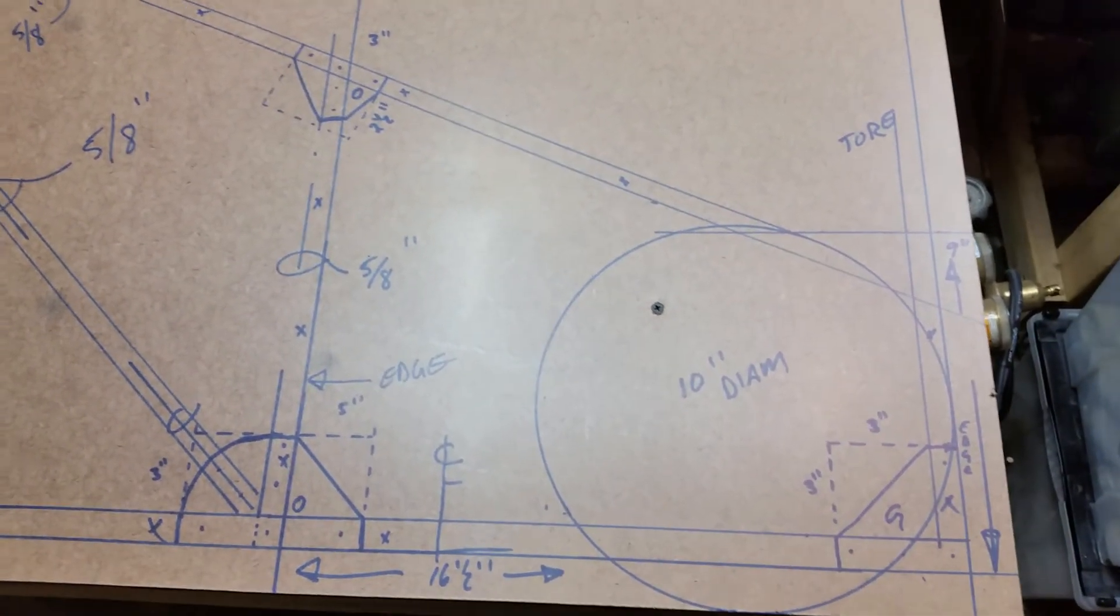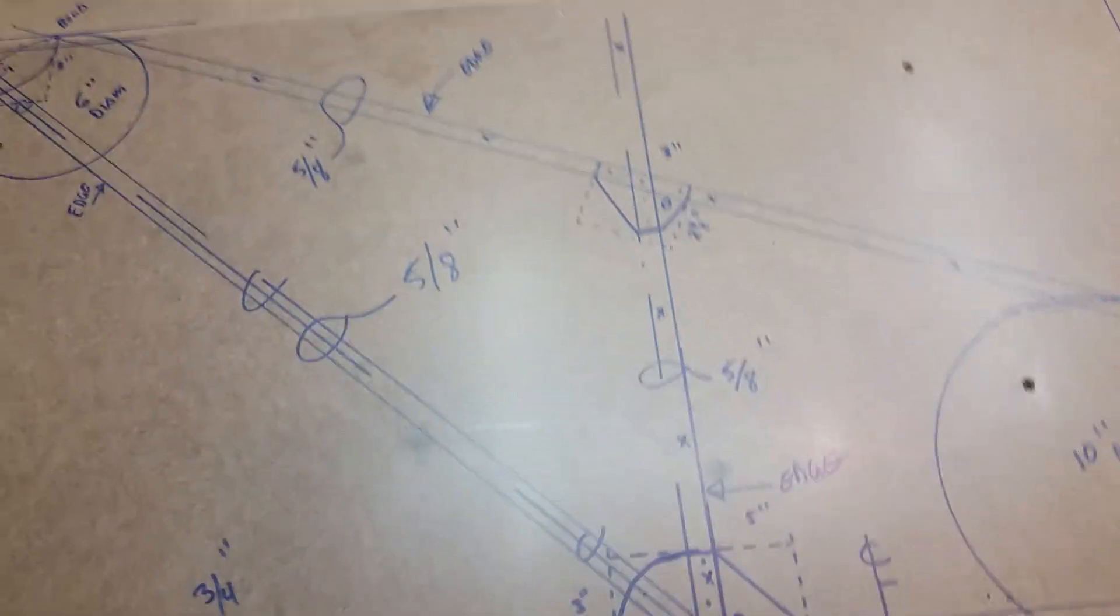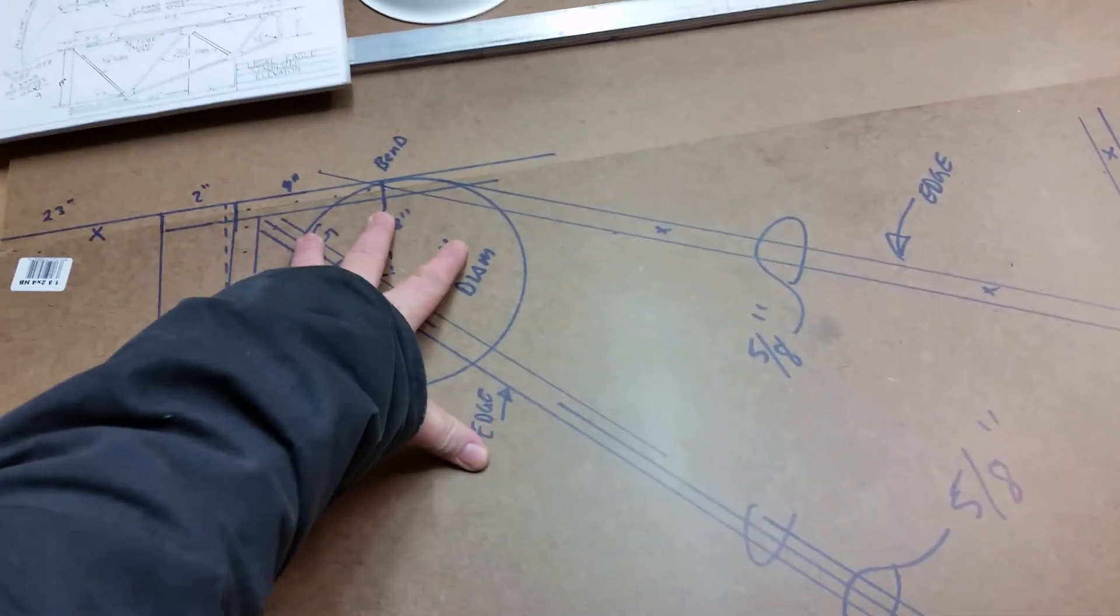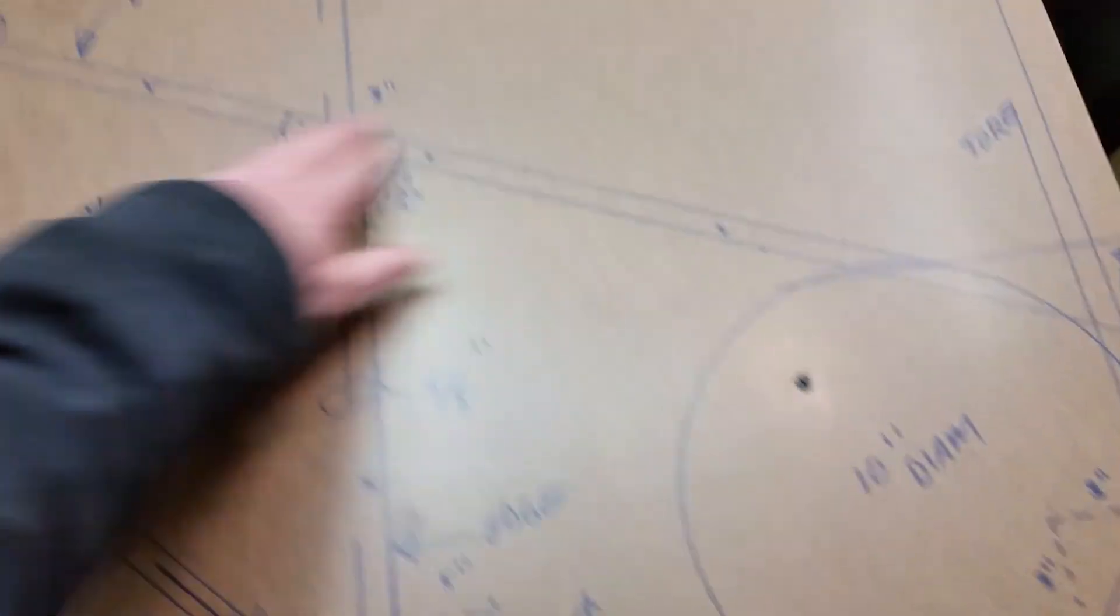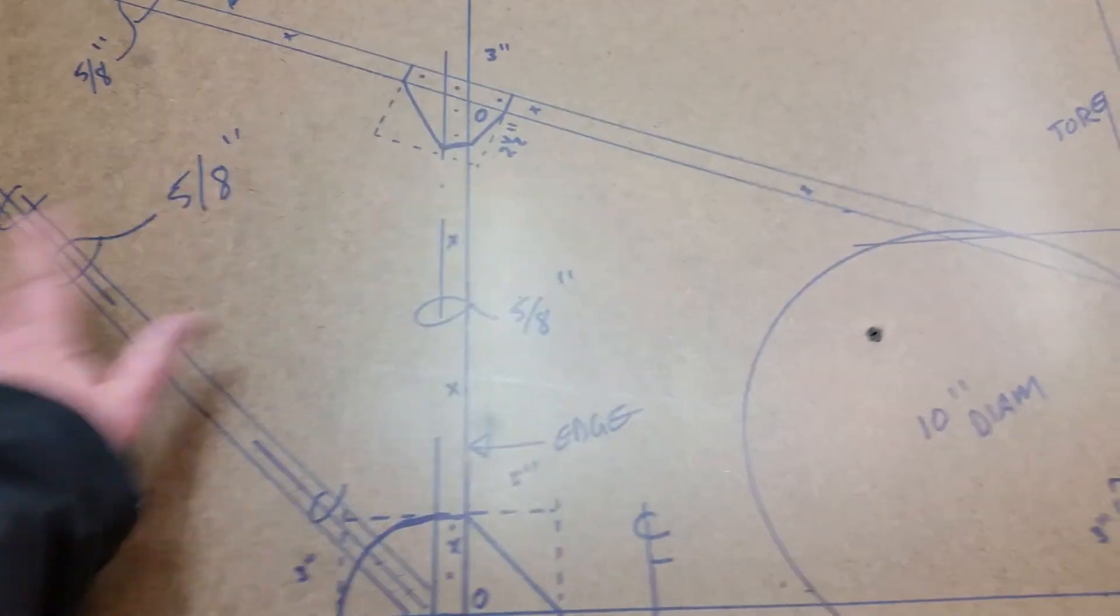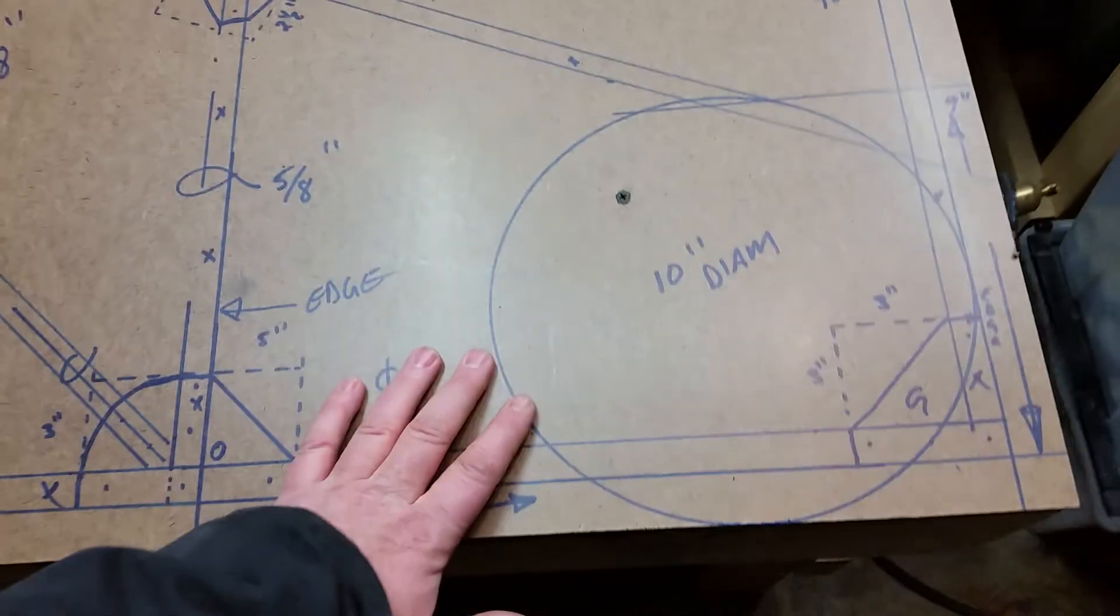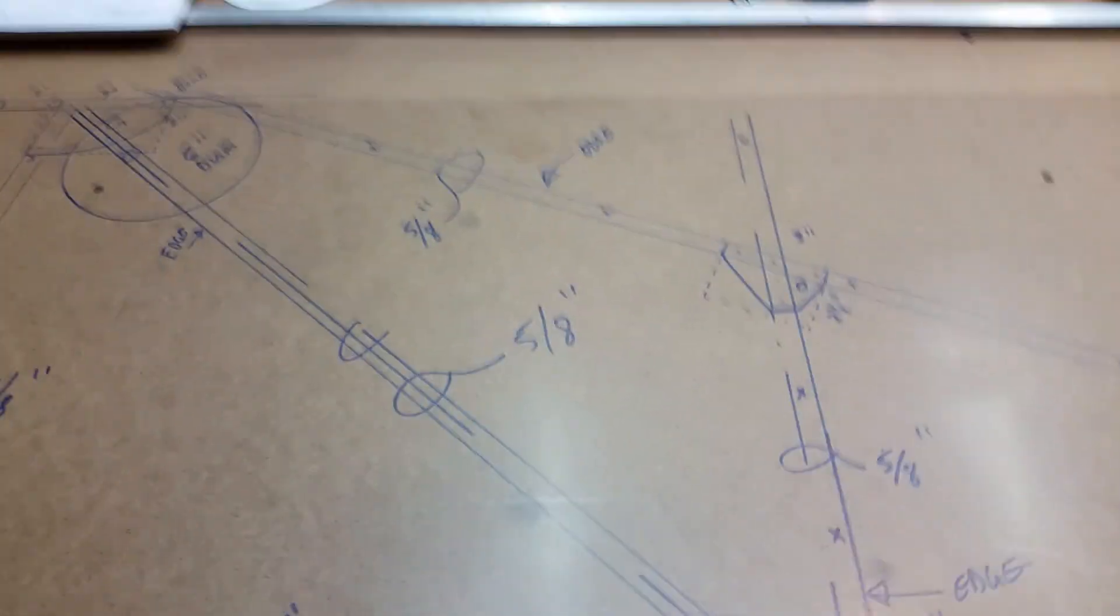So the next step is I'm going to build a little jig here, something to hold this tube so I can bend it, and I'm going to make two of these identical before I do anything else. I'm just going to bend them, done, and we'll just kind of see how that goes. And I'll give you an update on the video.